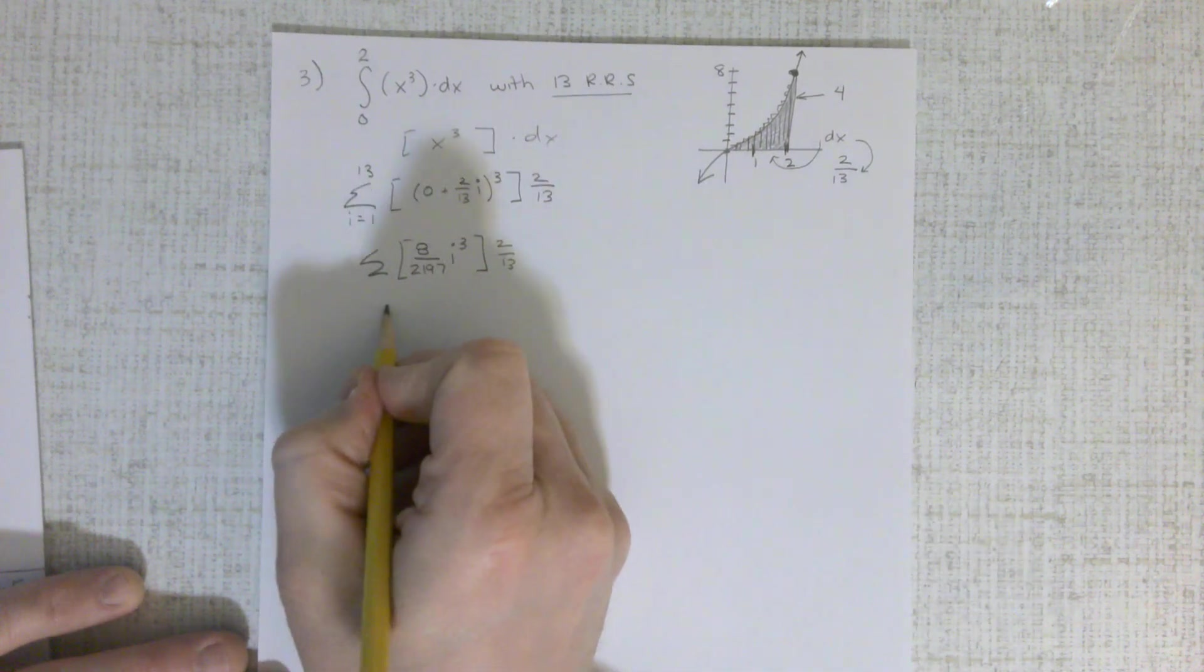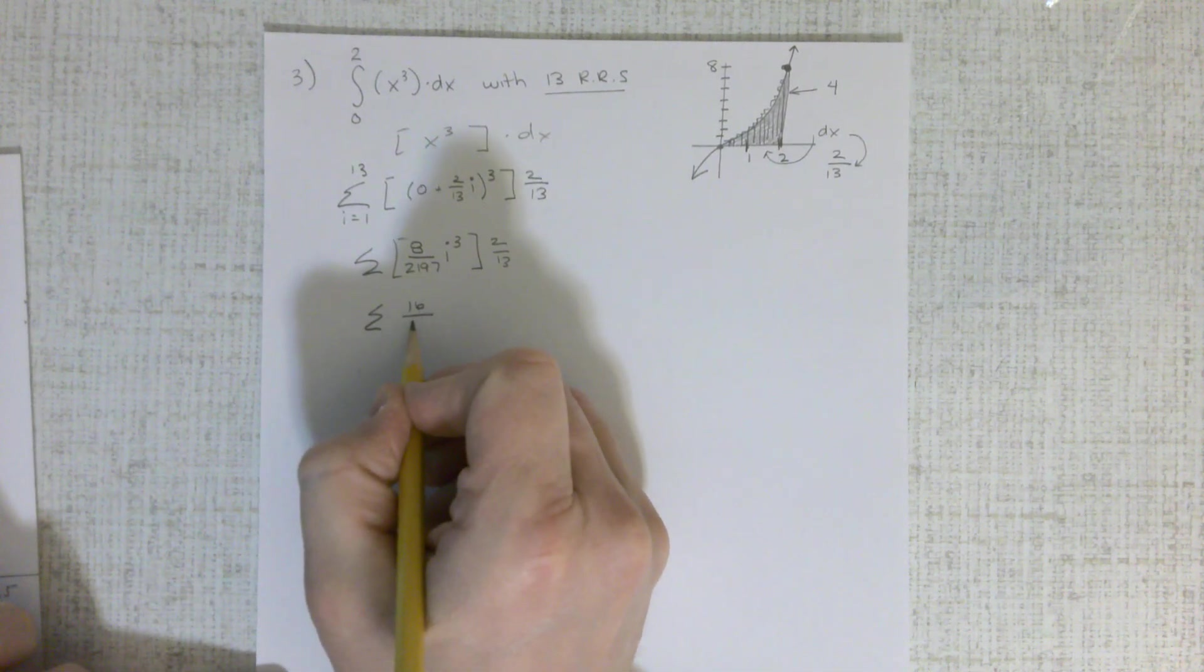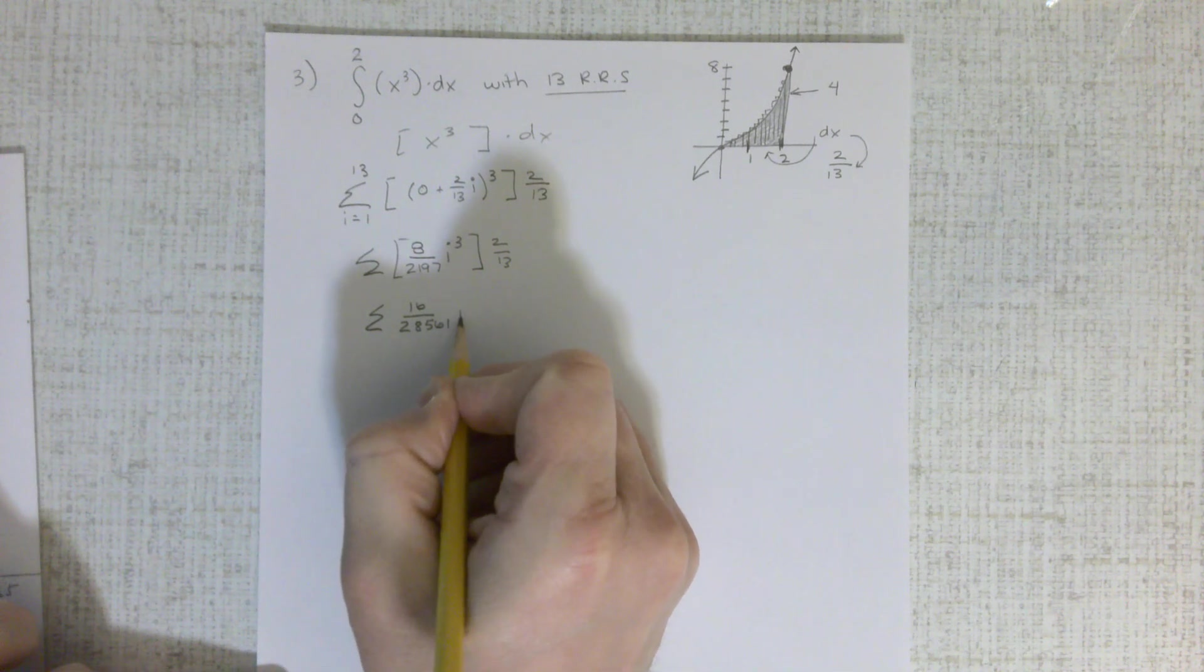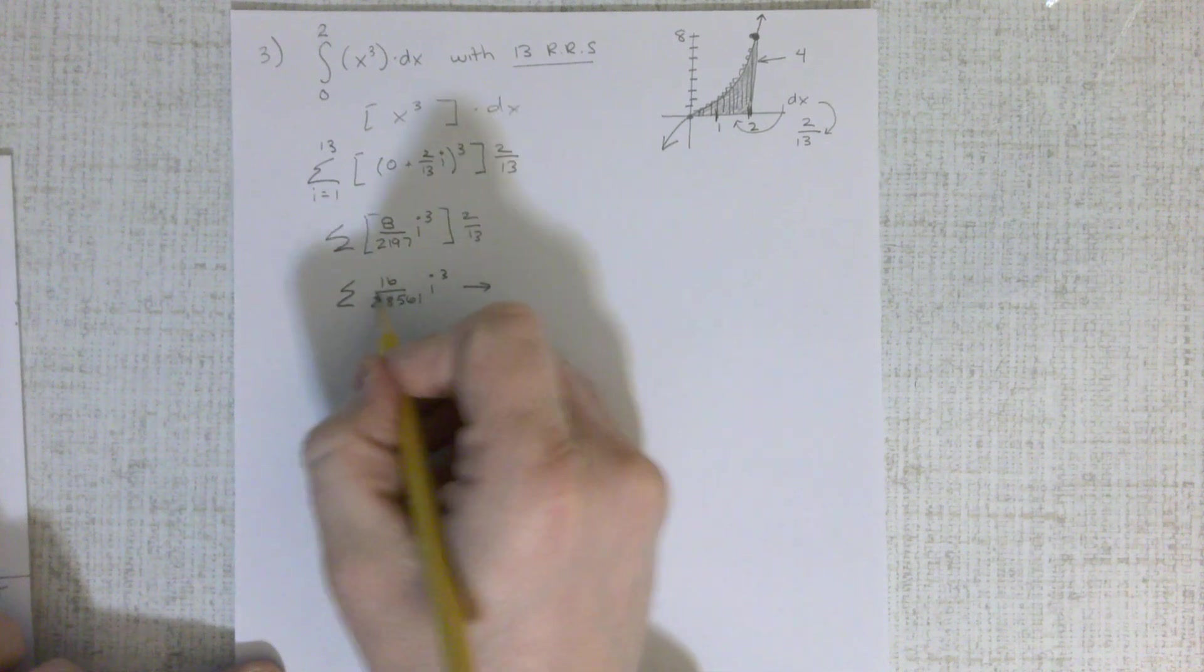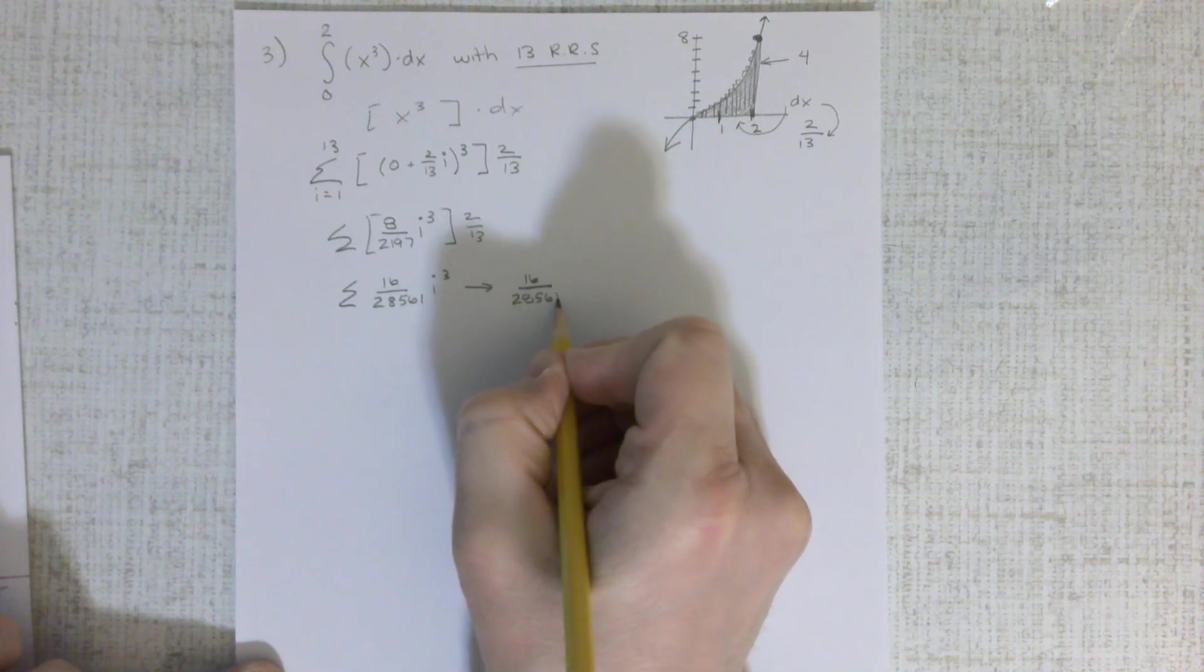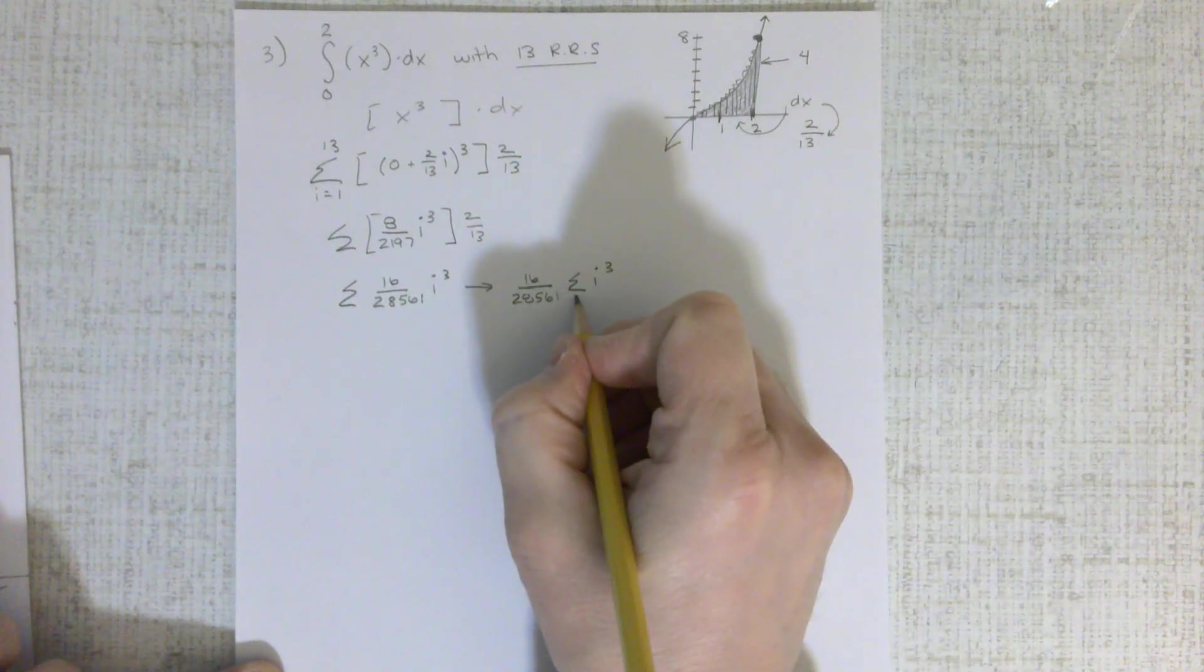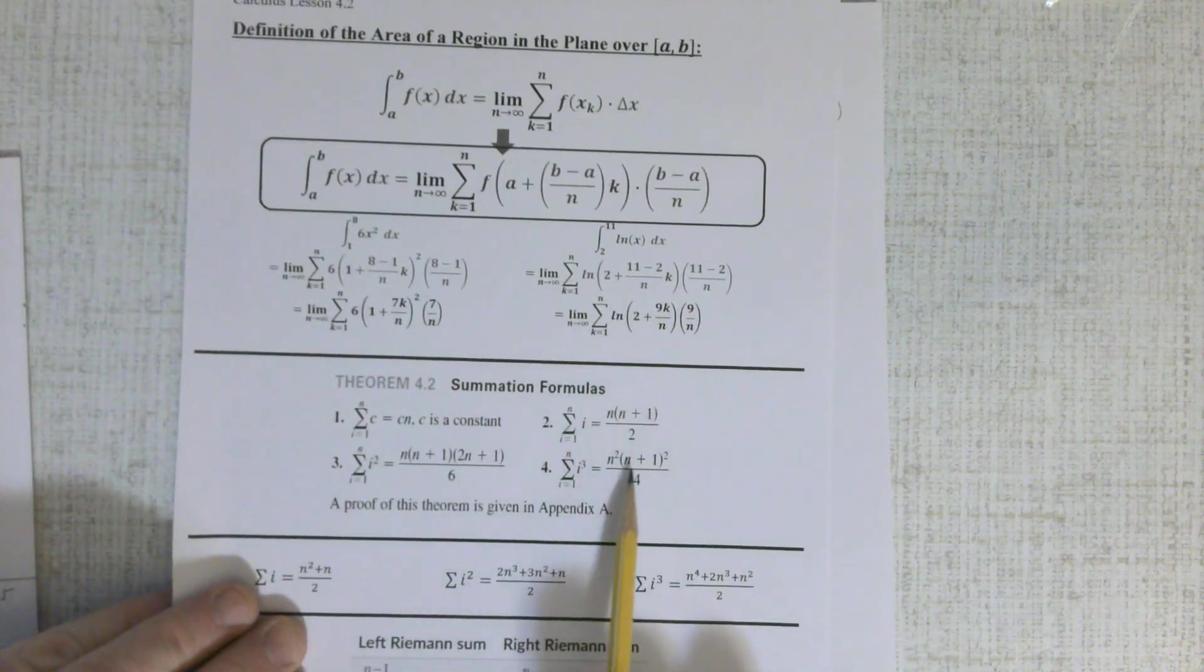Again, multiplied it in there. We have the sum of 16 over 28,581, i cubed. Now let's separate it. Let's pull this constant out to the front. Summation, i cubed. Going from 1 to 13, my formula. Now I can use this i cubed formula, which is right there.